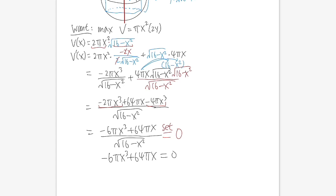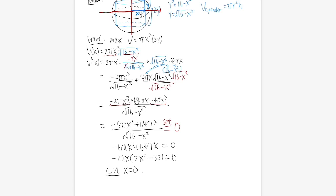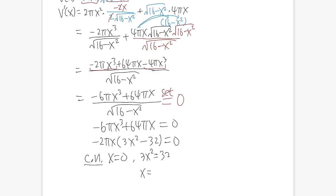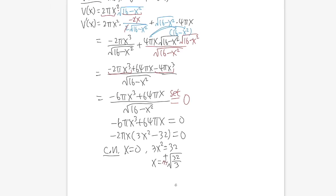Factor out −2πx: −2πx·(3x² − 32) = 0. This gives critical numbers x = 0 (which gives zero volume — discard) and 3x² − 32 = 0, so 3x² = 32, x² = 32/3, and x = √(32/3) (taking the positive root).